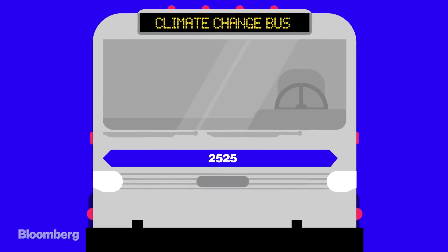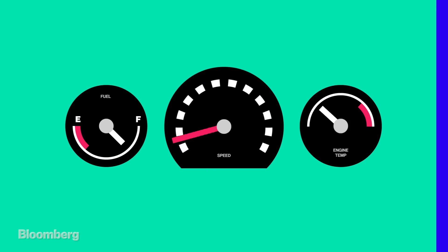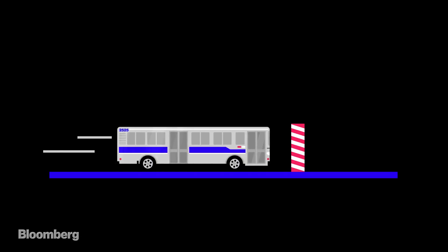Picture a bus. A big silver bus. Like a bus, the changing climate can speed up, slow down, overheat, or, if things go very wrong, crash.